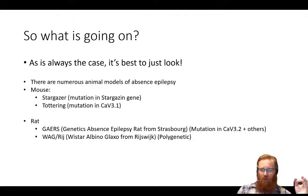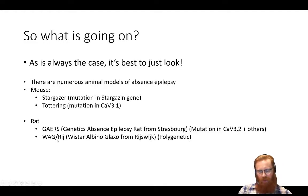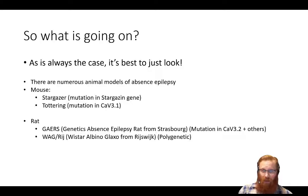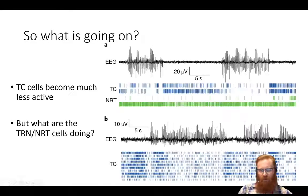Thankfully, there's a collection of rodents with genetic absence epilepsy. Some, like the GAERS and WAG/Rij rats, have very human-looking absence epilepsy in terms of EEG and behavioral arrest — they look like they lose consciousness. A lot of the best work is done in these animals.